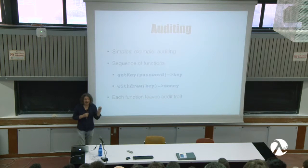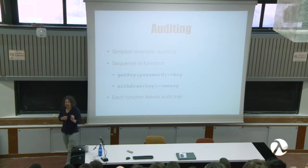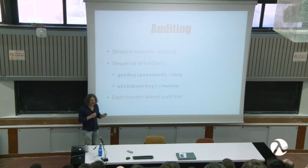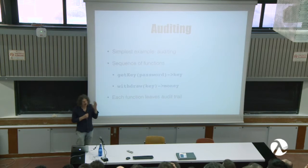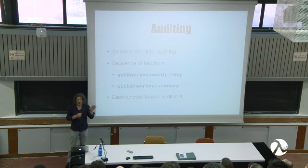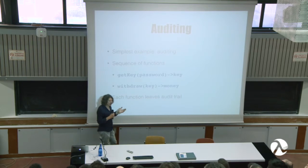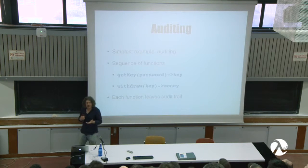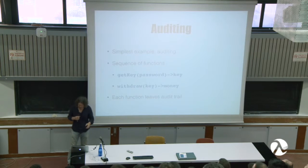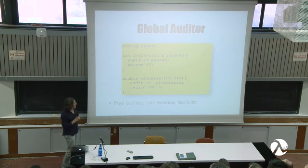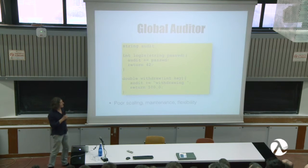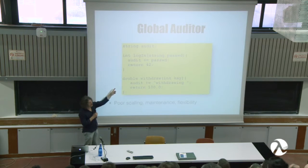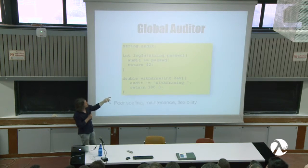The simplest solution that immediately comes to mind to an imperative programmer is a global variable. Let's have a global variable — a string — that's the audit trail, the log to which we append our information. In C++ that's a normal thing, because this is how you do input-output. You have global objects like cout and cin, and nobody complains. So a global object is fine. This is implementation number one, but it's not pure functions because they have side effects — the side effect of appending something to this global string 'audit.'